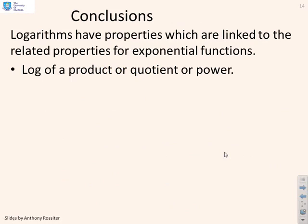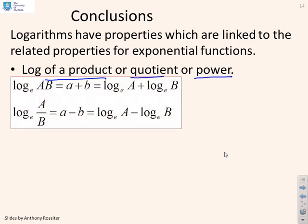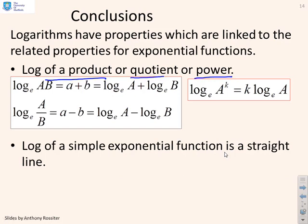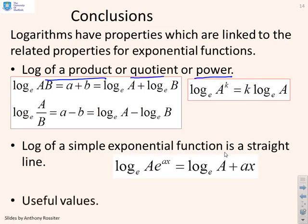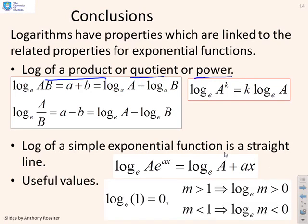So some conclusions. Logarithms have properties which are linked to the related properties for exponential functions. The log of a product is the sum of the logs. The log of a quotient is the difference of the logs. And the log of a power is the power times the original log — and they came directly from the exponential. The log of a simple exponential function is a straight line, which can be very useful in modelling. And some other useful values: the log of 1 is zero, the log of a number bigger than 1 is greater than zero, and the log of a number smaller than 1 is negative.